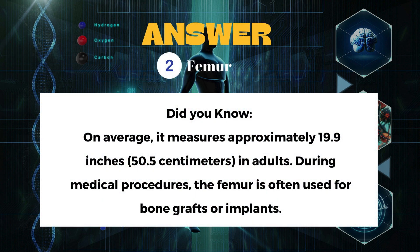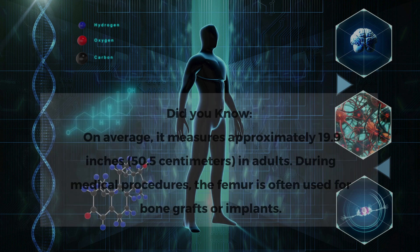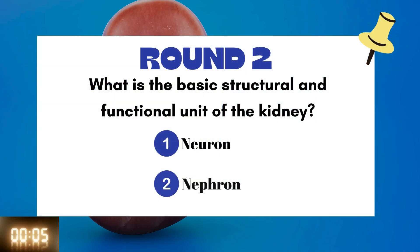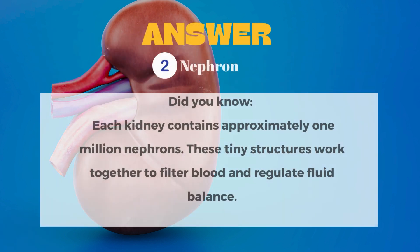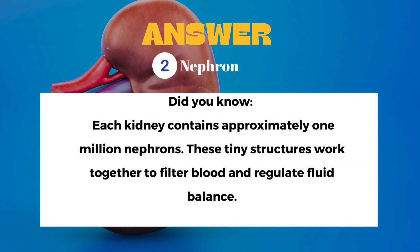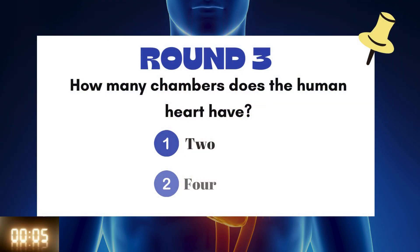Round two: What is the basic structure and functional unit of the kidney? The answer is the nephron.